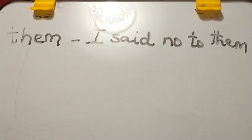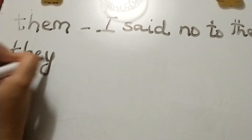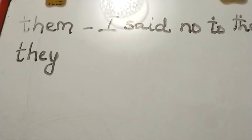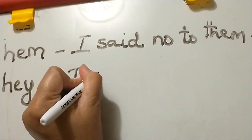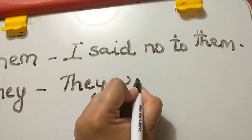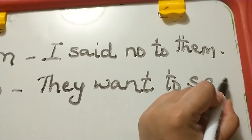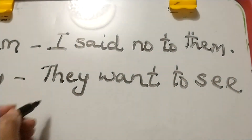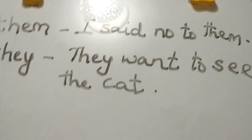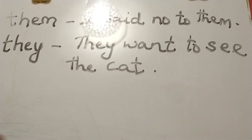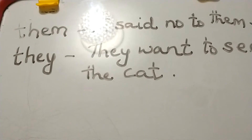Let's look at the next word: TH-EY: THEY. The sentence is: 'They want to see the cat.' The sight word is TH-EY: THEY.